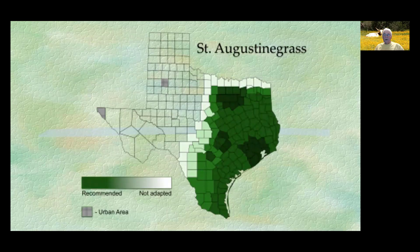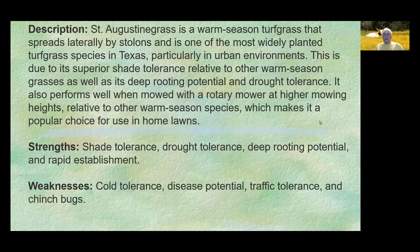Our next grass is St. Augustine grass, recommended for Williamson County — and this is the grass I have in my yard. It's a warm-season turf grass that spreads laterally by stolons and is one of the most widely planted turf grass species in Texas, particularly in urban environments. This is due to its superior shade tolerance, deep rooting potential, and drought tolerance. Strengths include shade tolerance, drought tolerance, deep rooting potential, and rapid establishment. Weaknesses include cold tolerance problems, disease potential, traffic tolerance issues, and chinch bugs.